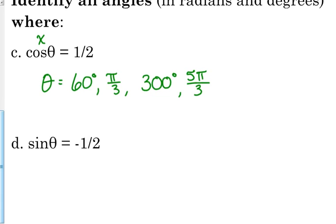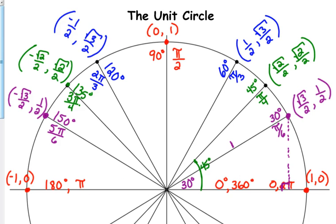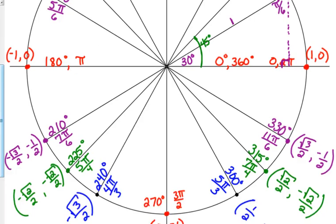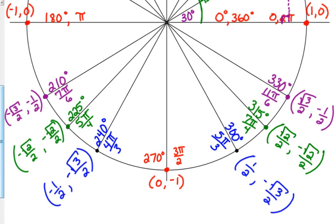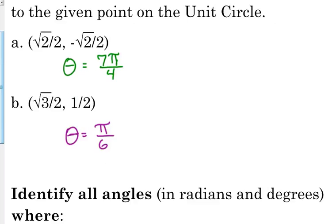Sine is equal to negative one half. Sine is my y coordinate. So I'm looking on my unit circle, and I have a negative y. So I know I'm looking in the third and fourth. So I'm looking for where the y is negative one half at 210, 7π over 6, or 330, 11π over 6.